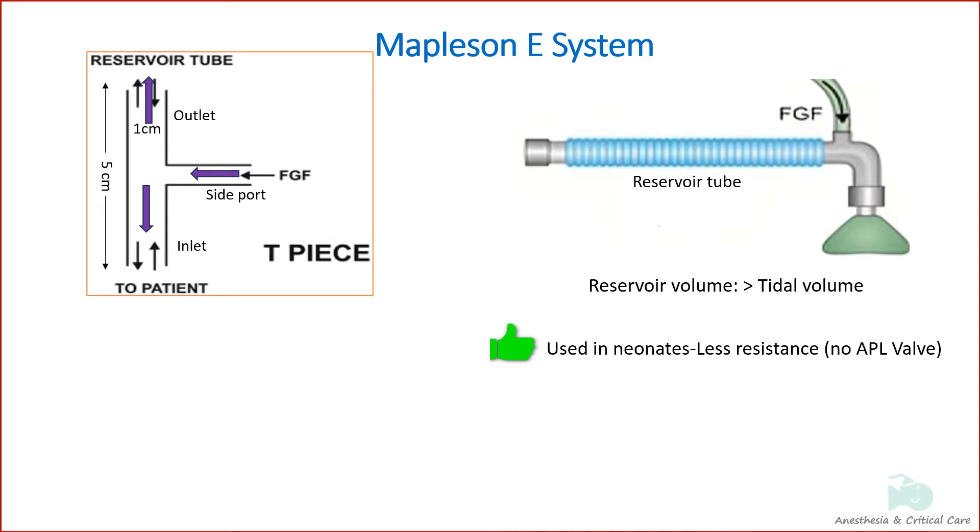However, its use has decreased in anesthesia because it is difficult to scavenge excess gases and high fresh gas flows, that is, 2 to 3 times minute ventilation.